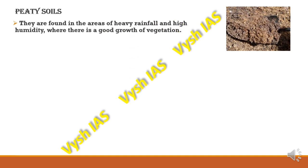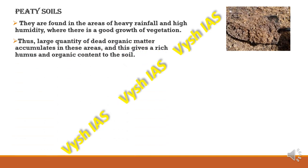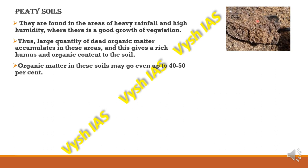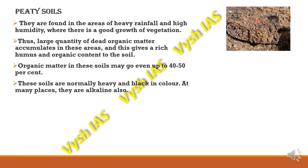Peaty soils are very high in organic matter and moisture content because they are found in areas of heavy rainfall and high humidity where vegetation growth is very good. Large quantities of dead organic matter accumulate in these areas, giving the soil a rich humus and organic content. The soil is very soft and moist, with high water content — almost in a semi-liquid form. The organic matter in these soils can go up to 40 to 50 percent. These soils are normally heavy and black in colour.